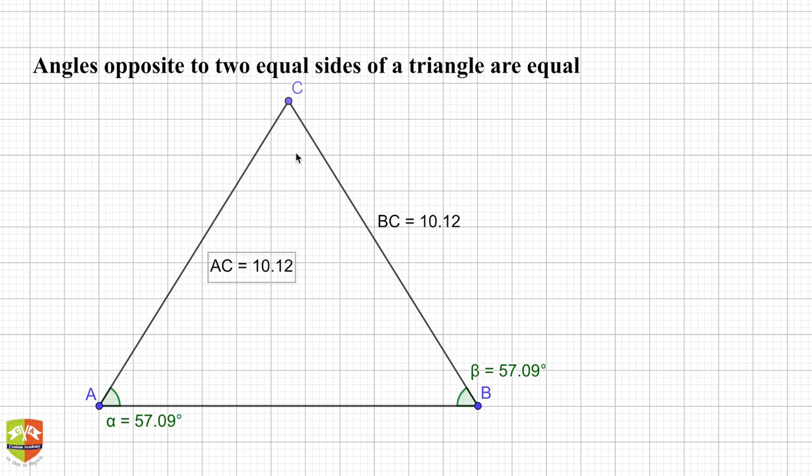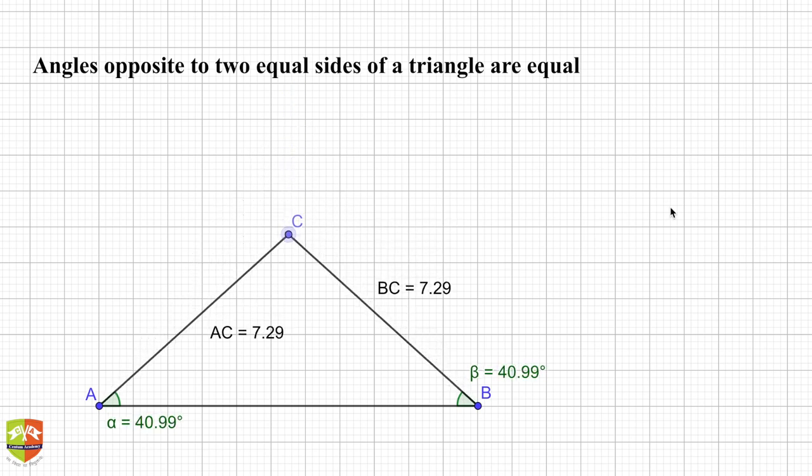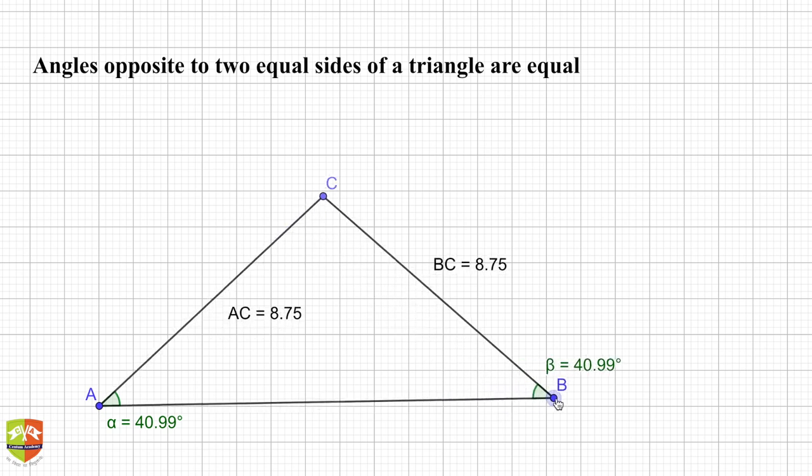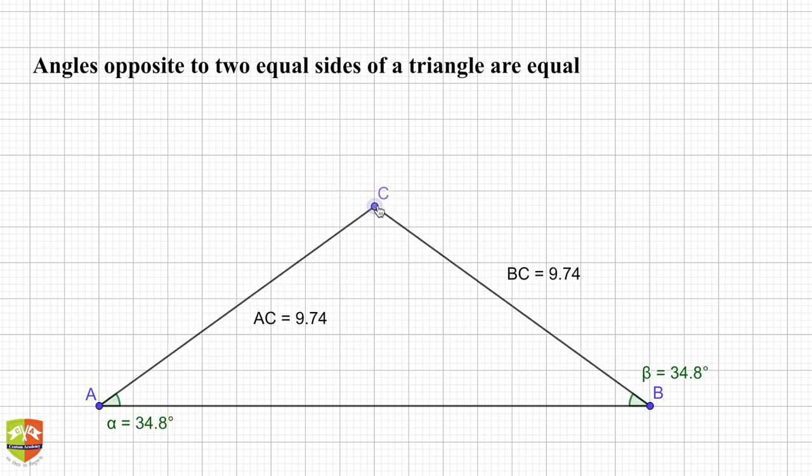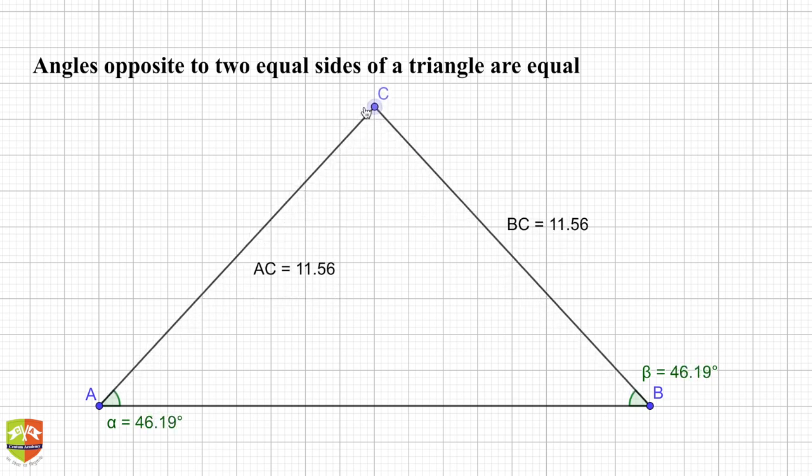Let's start with the validation. I'm going to change the position of C, and you have to observe the angles. Now this is the new position of C and you can see the value of alpha: 40.99, 40.99. The sides remain the same. If I change the location of B, you can see the value of AC and BC has changed but the angles remain the same.